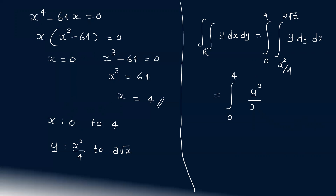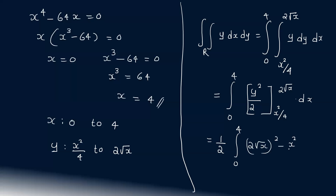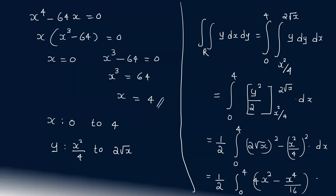Integrating y gives y²/2 evaluated from x²/4 to 2√x. This equals (1/2) times the integral from 0 to 4 of [(2√x)² - (x²/4)²] dx, which is (1/2) integral from 0 to 4 of [4x - x⁴/16] dx.